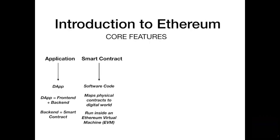The smart contract in an Ethereum network runs inside an Ethereum Virtual Machine and is available on every node in the network. Every node has the same copy of the smart contract and runs the same code and logic. We will go through the process of developing and deploying a smart contract during this course. The smart contract maps to the smart contract layer of our reference architecture described in earlier videos.